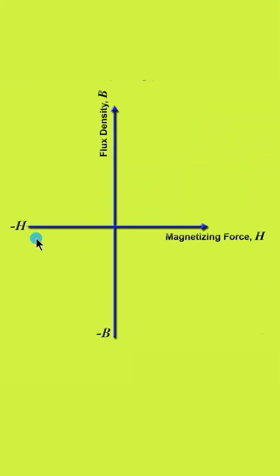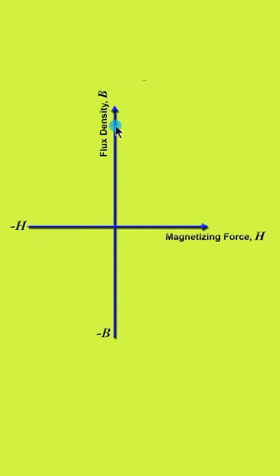Next, we will plot the relation between magnetizing force H and flux density B, with magnetizing force H on the x-axis and flux density B on the y-axis.